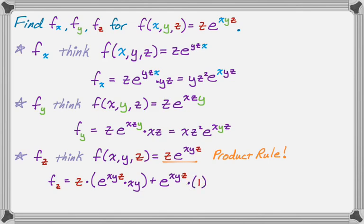And then here you can see there's an e^(xyz) in both terms. So I'm going to factor that out because it looks a lot simpler if you do that. So I'm going to have (xyz + 1) times e^(xyz).